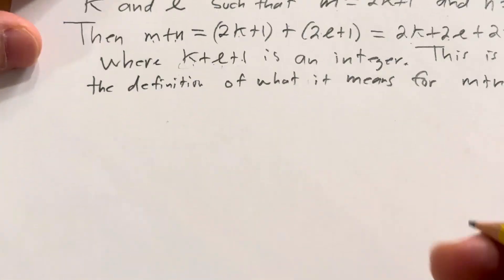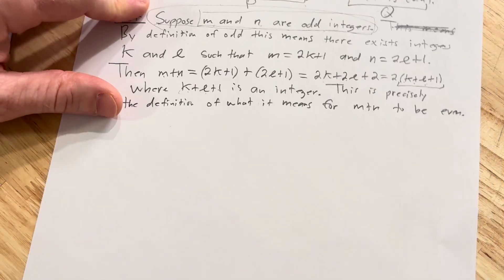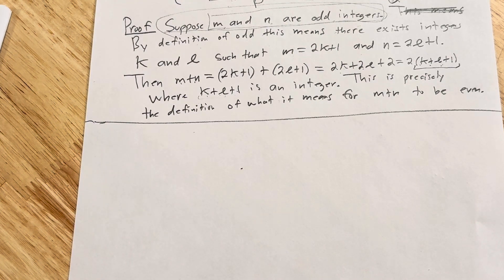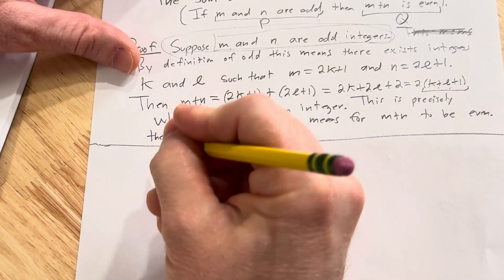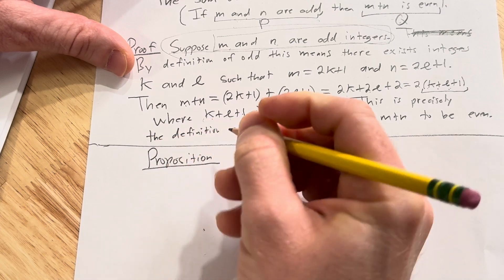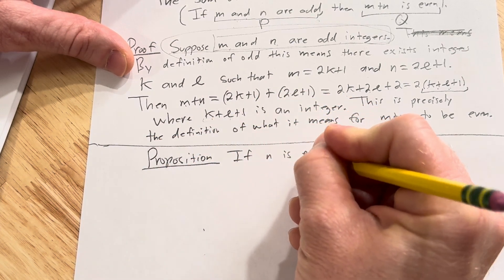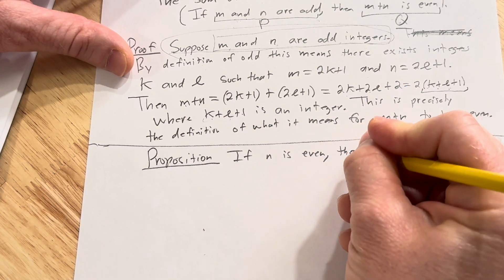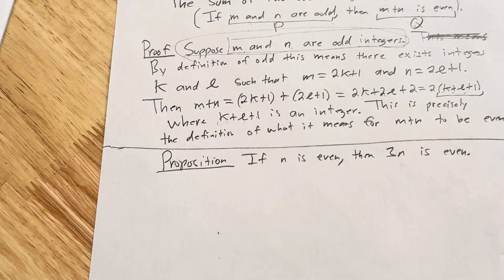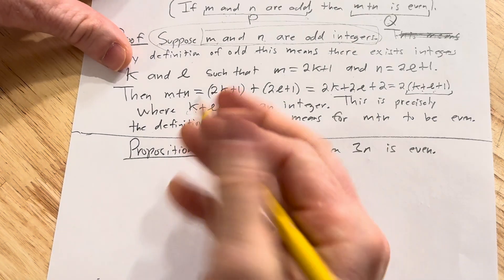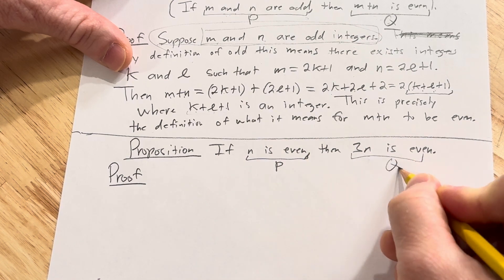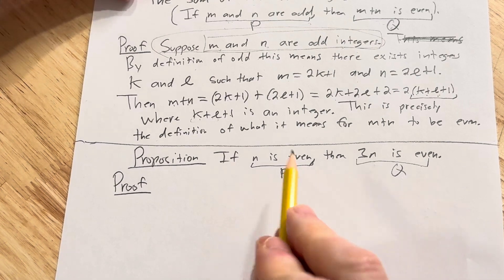Let's do one more proof, as promised. The next proposition is: if N is even, then 3N is even. In a direct proof, you assume P is true and then show Q is true. So we start the same way — suppose N is even.